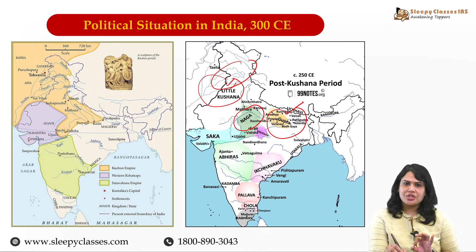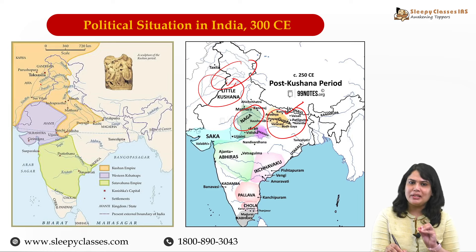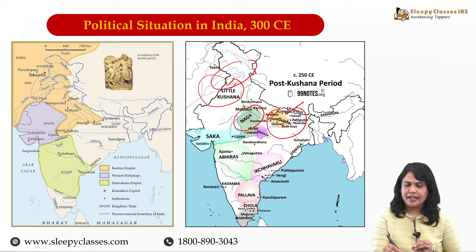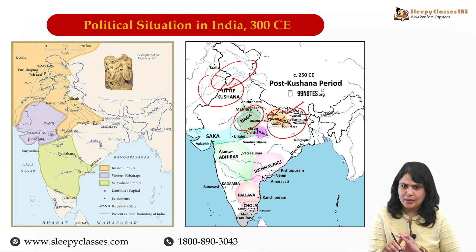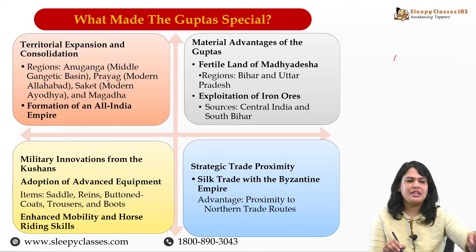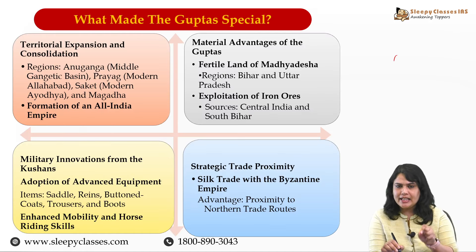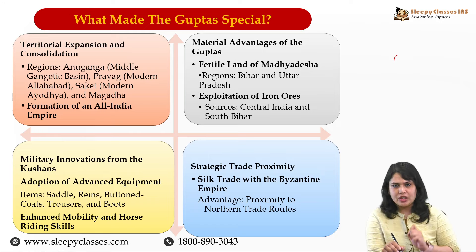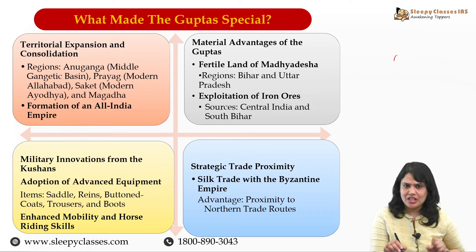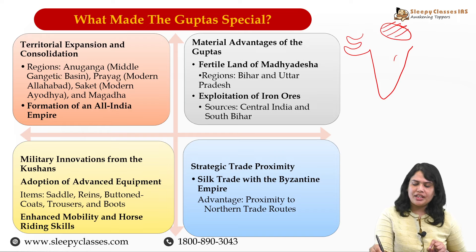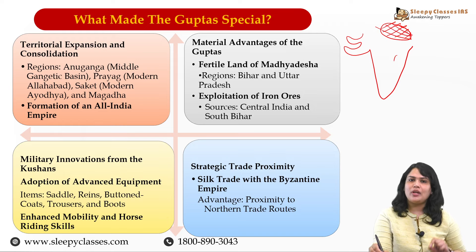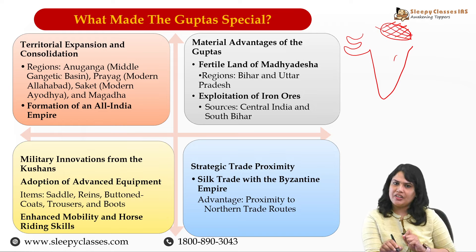We will see the Guptas with their core area in the middle Gangetic plain, in and around Ayodhya or Saket, Prayag, Varanasi, Pataliputra. They will be successful in establishing a full-fledged empire. First of all, we will see what were the factors that aided the initial rise of the Guptas vis-à-vis the other regional powers. If we talk about the core area, this is the middle Gangetic plain - a very fertile area, so the agricultural productivity is good and the state has a good revenue base.